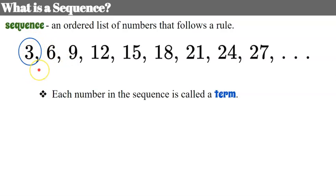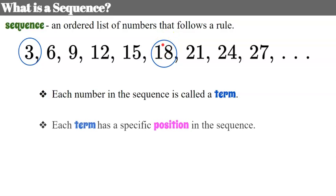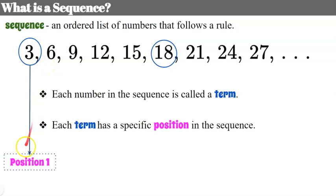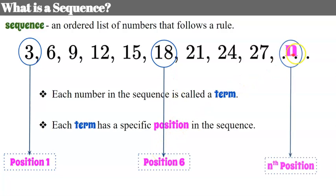3 is our first term and 18 is our sixth term, so each term has a specific position in the sequence. We can say that 3 is in position 1, 18 is in position 6, and then we have what we refer to in algebra as our nth term, which is in our nth position — meaning it will keep going, extending infinitely to the right.